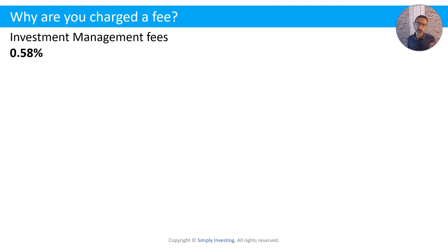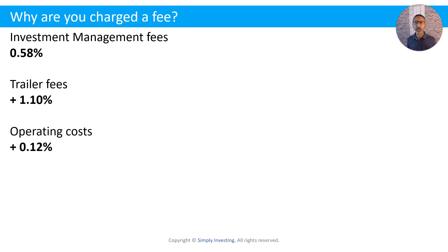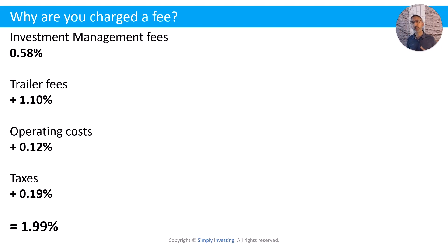For example, if the investment management fee was 0.58%, the trailing fee 1.1%, operating costs 0.12%, and taxes 0.19%, that adds up to 1.99% — and that's how you arrive at the MER. That's what you as an investor are charged every single year. You get charged that fee for as long as you own those funds — 5 years, 10, 20, 30, 40, 50 years. Whether or not the stock market makes money or loses money, you still have to pay the fee.